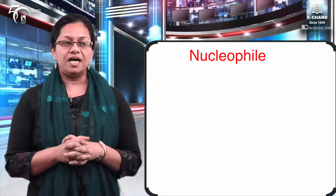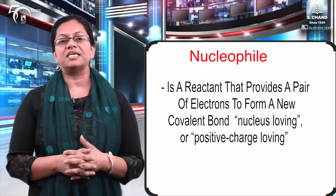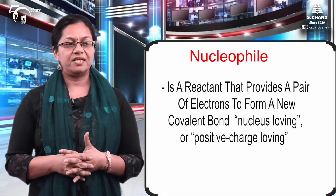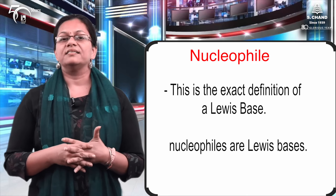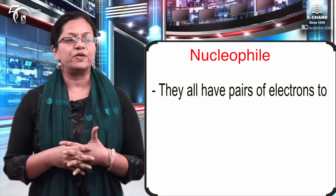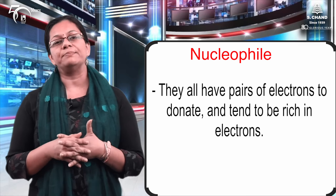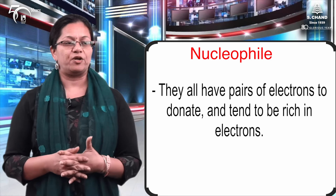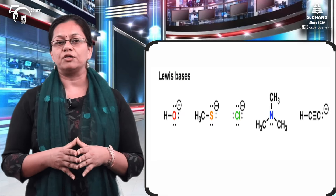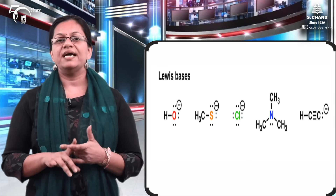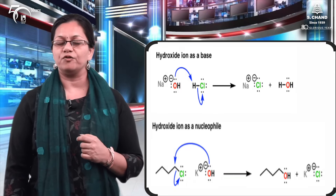A nucleophile is a reactant that provides a pair of electrons to form a new covalent bond. It is also termed as nucleus-loving or positive-charge-loving entity. This definition sounds familiar because it is exactly the same as that for Lewis bases — Lewis bases and nucleophiles are the same. When the nucleophile donates a pair of electrons to a proton, it is called a Brønsted base or simply a base. Nucleophiles have pairs of electrons to donate and tend to be electron-rich. We can conclude that a nucleophile is rich in electrons, behaves as a base, and will donate electrons.